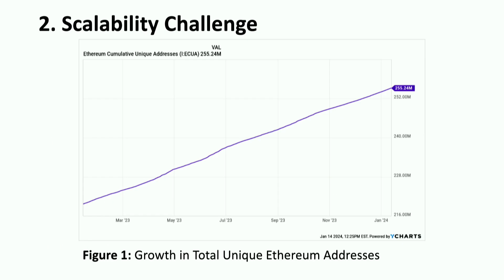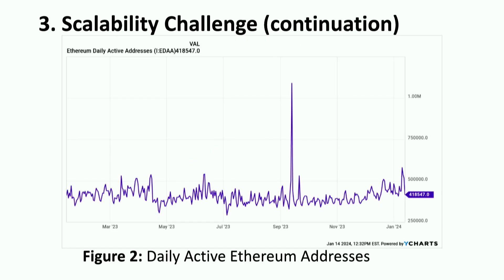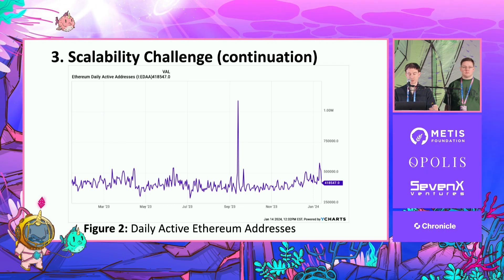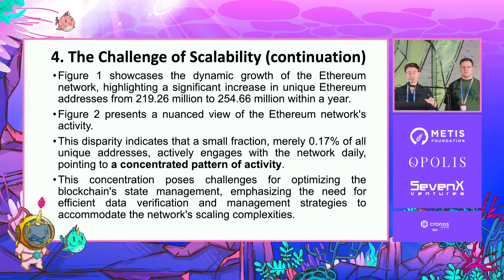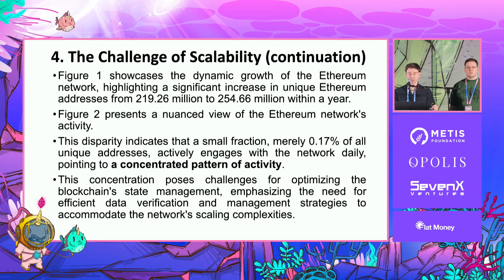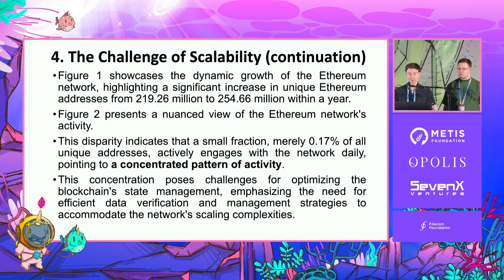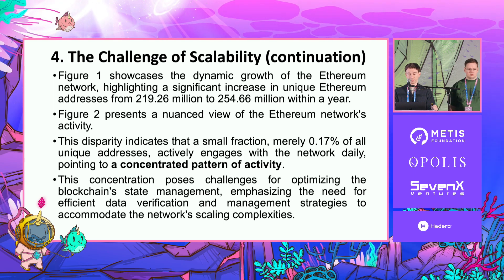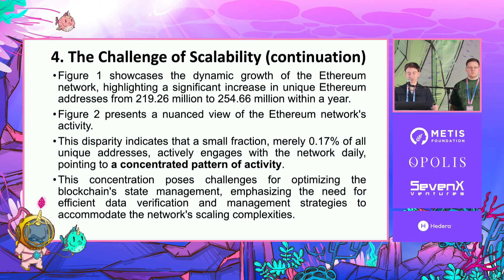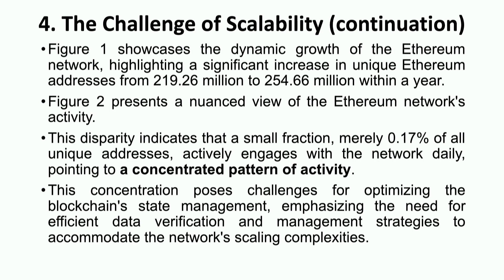The growth of total unique Ethereum addresses over a one-year period is quite significant. Looking at the frequency of use, the number of frequently daily used addresses is quite narrow, representing only 17% of unique addresses that are actively engaged with the network daily, pointing to a high concentration of activity. This concentration presents challenges for optimizing blockchain state management, emphasizing the need for efficient data verification and management strategies to accommodate network scaling complexities.